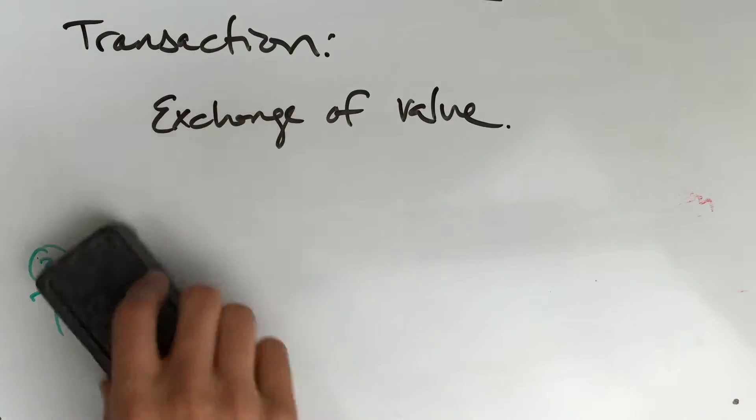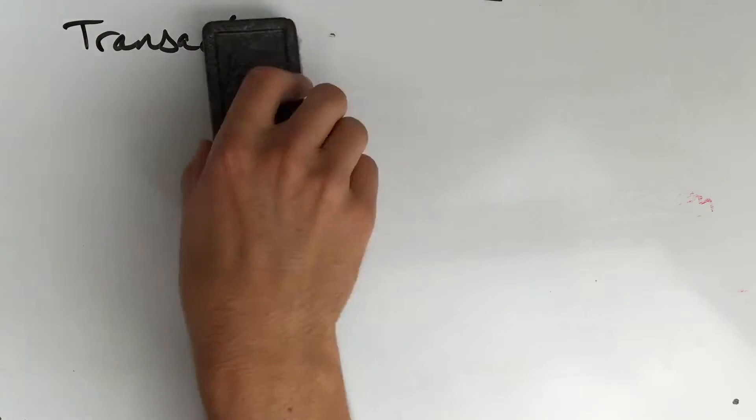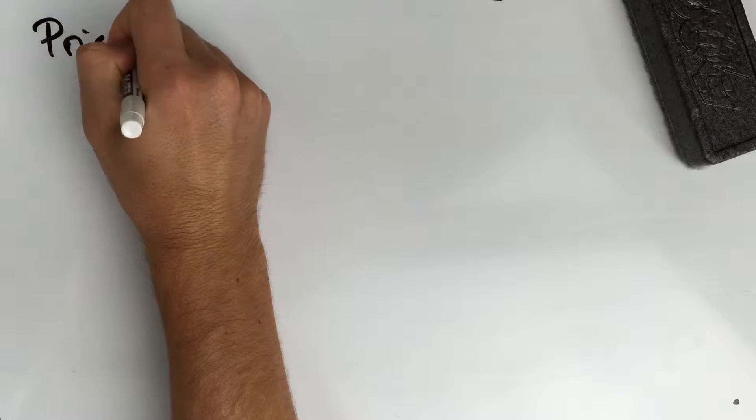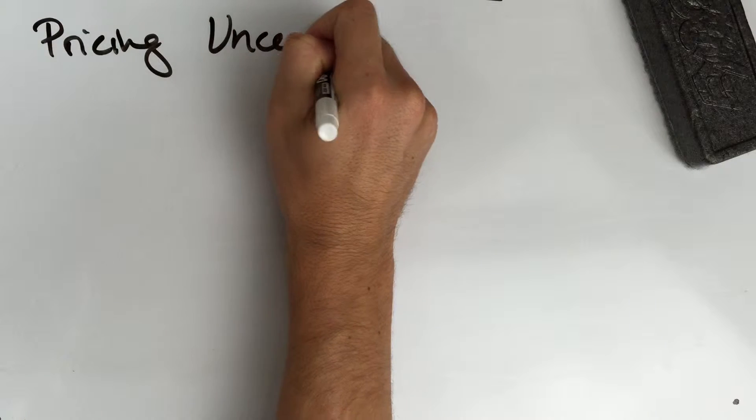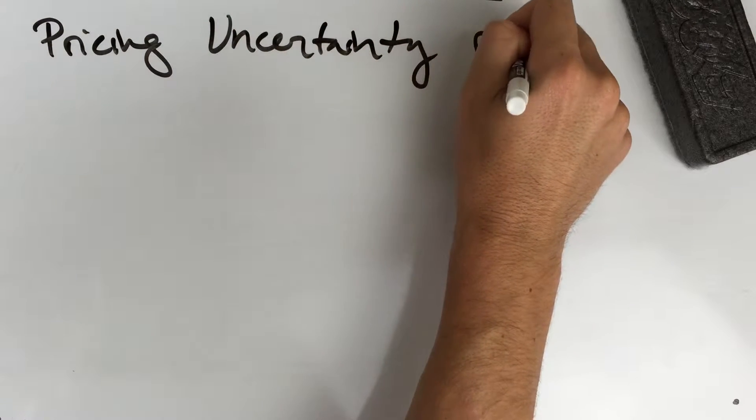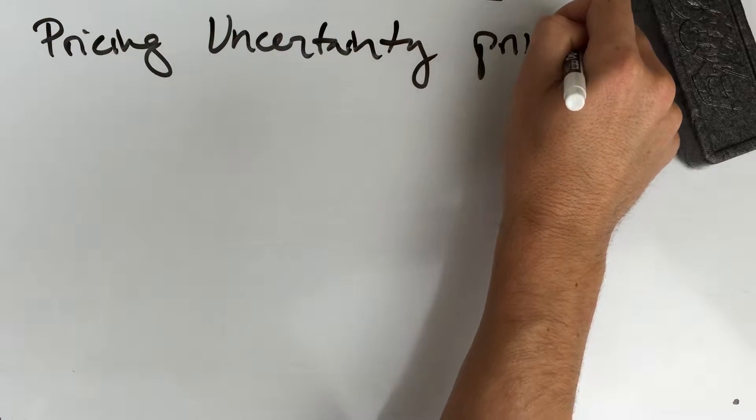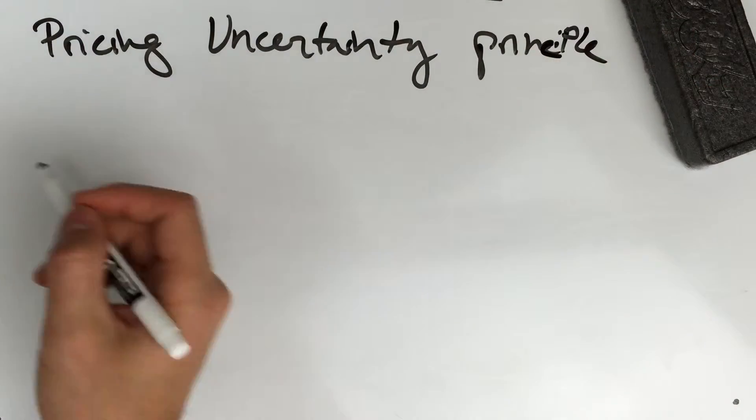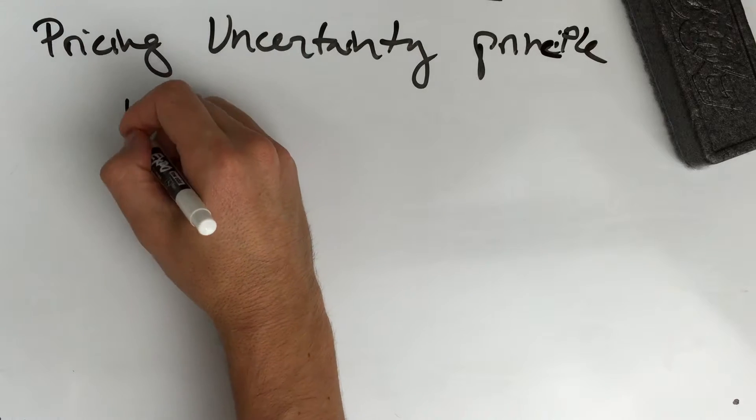This next section is the pricing uncertainty principle. I'd actually never heard of this before and I don't think I know a ton about it, so hopefully I do it justice. Essentially, what this says is that prices are arbitrary and malleable.